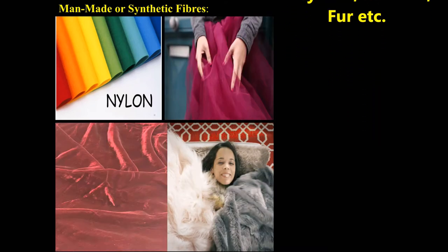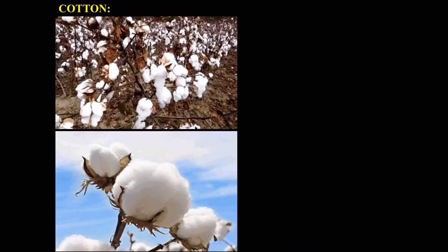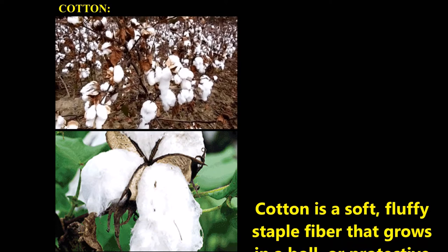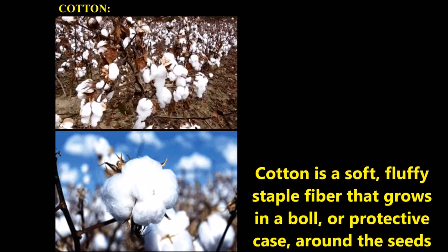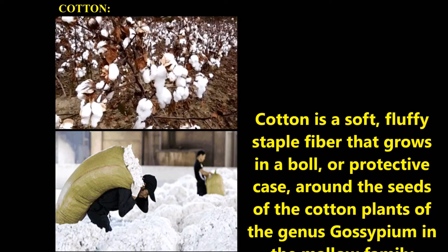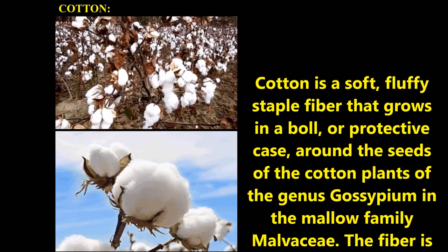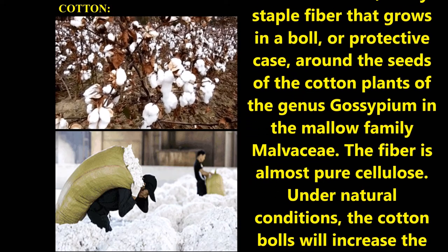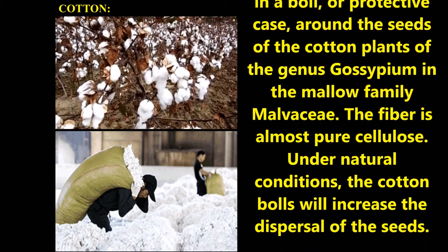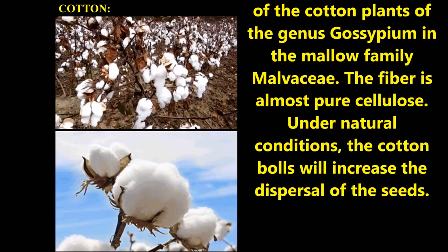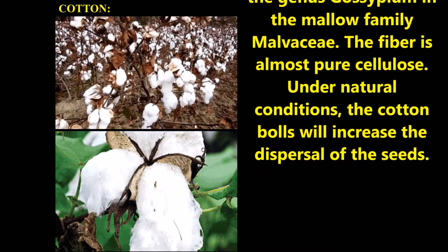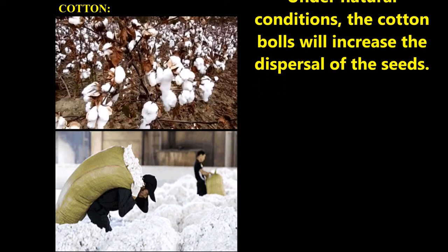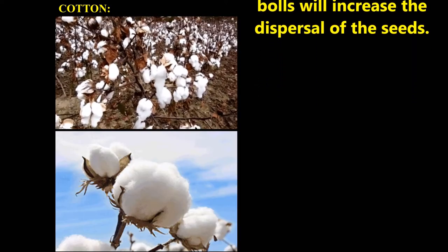Let us discuss natural fibers. First, we'll discuss cotton. Cotton is a soft fluffy staple fiber that grows in a ball or protective case around the seeds of cotton plants of the genus Gossypium in the mallow family Malvaceae. The fiber is almost pure cellulose. Under natural conditions, the cotton bolls increase the dispersal of seeds.